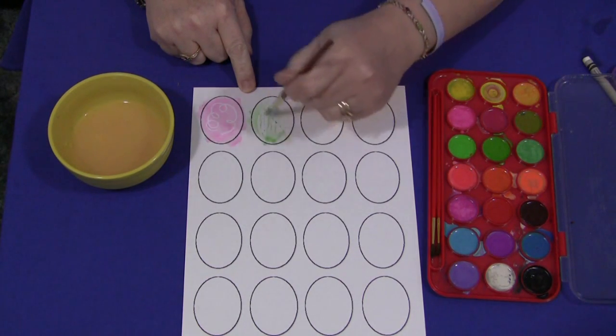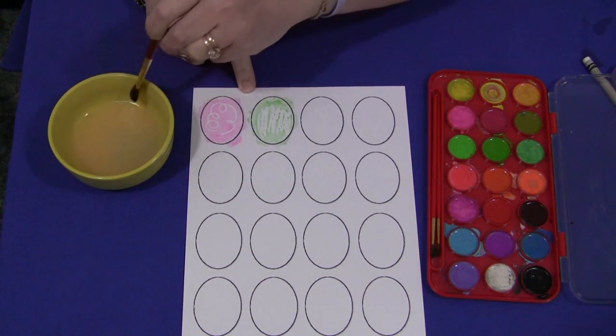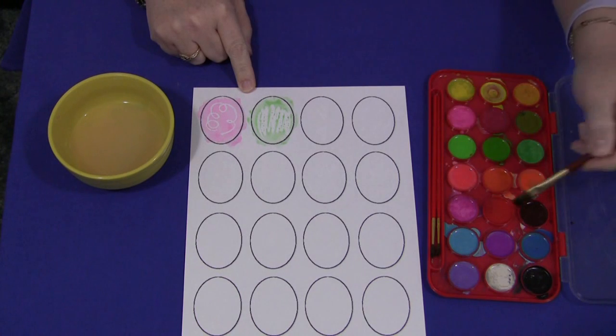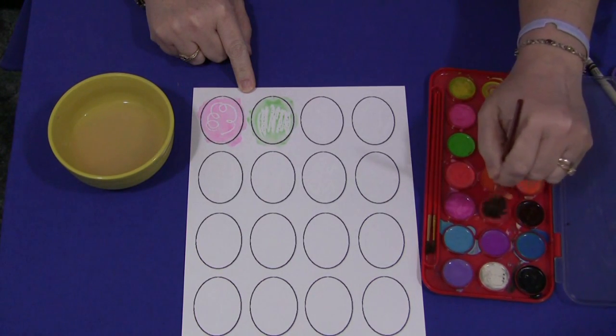And then they would let those dry before cutting them out. And that's really important to make sure that the eggs are dry before cutting. Otherwise they tend to curl and it's more difficult to glue onto the paper.